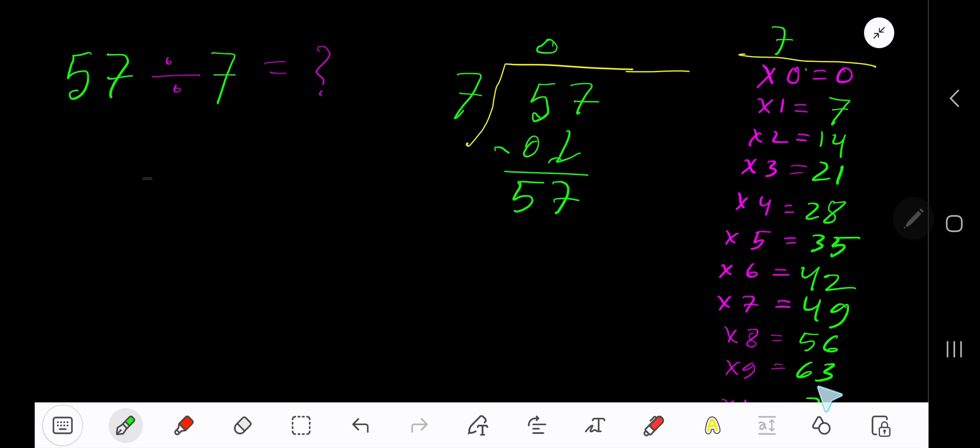7 goes into 57 how many times? 9 times 63, which is greater, so 8 times. 8 times 7 gives you 56. Subtract to get 1. So our answer is 8 remainder 1.